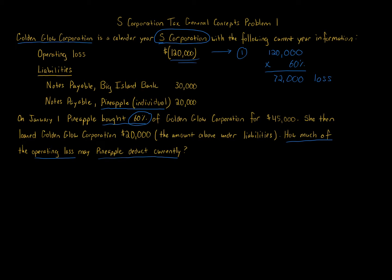However, there are limits when it comes to losses. The general idea in tax is that income is broad and deductions or losses are narrow. The biggest loss limitation to understand — especially because it differs between entities — is the adjusted basis limitation. Whether it's a partnership or an S corporation, you are limited by your basis. Step two is to consider the adjusted basis limitations.